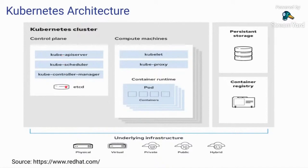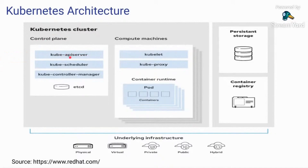A control plane has multiple processes. You have the API server, the scheduler, and the Kubernetes controller manager. The API server is kind of the Kubernetes API — it's the entry point into your Kubernetes cluster and handles internal and external requests. API calls can be via the Kubernetes API, or if you're familiar with Kubernetes, you'll be using the kubectl command line. Whenever you instruct deploying an instance of your application, the first point of interface is the control plane and the kube API server. kubectl is the command line configuration tool for Kubernetes.